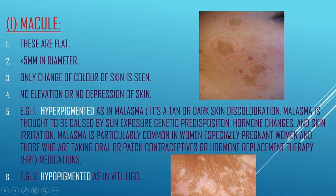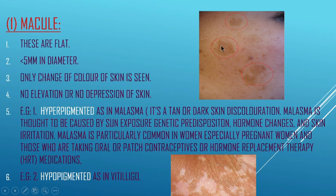Melasma is thought to be caused by sun exposure, genetic predisposition, hormone changes, and skin irritation. It is particularly common in women, especially pregnant women and those taking oral or patch contraceptives or hormone replacement therapy. An example of a hypopigmented macule is seen in vitiligo. As you can see in both pictures, the macules are flat — there is no elevation or depression, only a color change less than 5 mm in diameter.